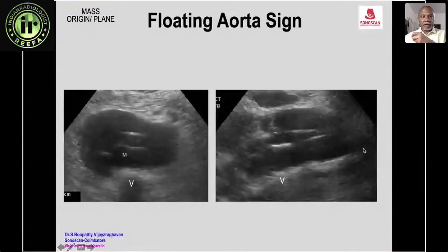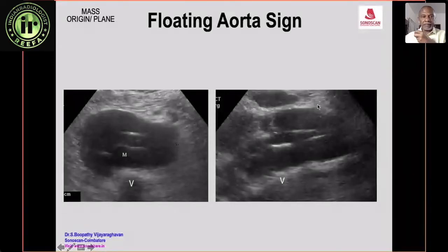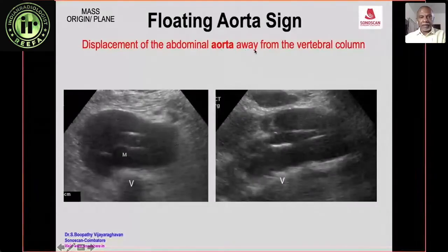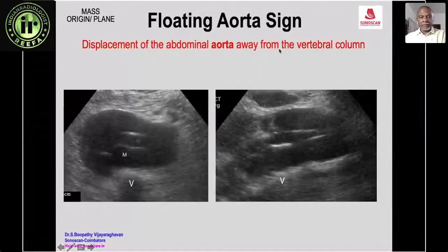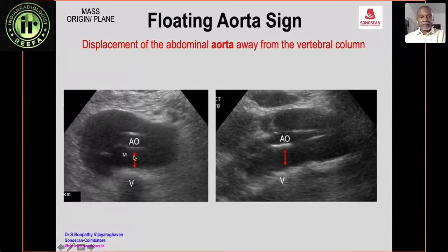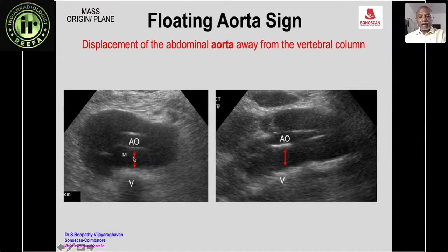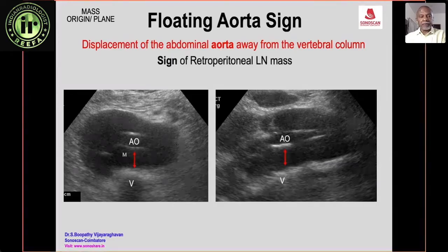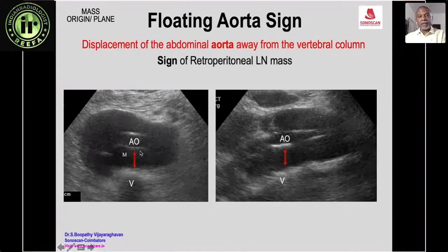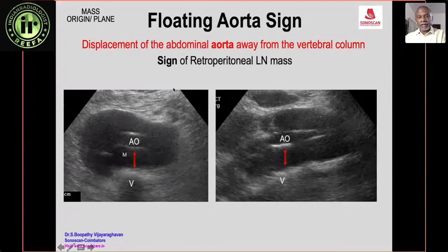The floating aorta sign is displacement of the abdominal aorta away from the vertebral column. The aorta is lifted up away from the spine, and this occurs only when there is a retroperitoneal lymph node mass elevating the aorta — making it a sign of retroperitoneal lymph node mass.